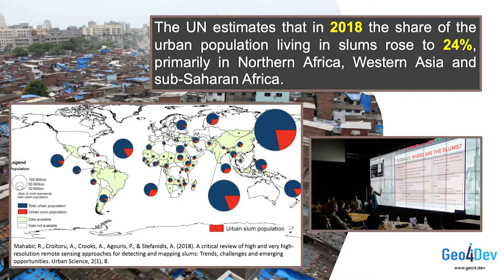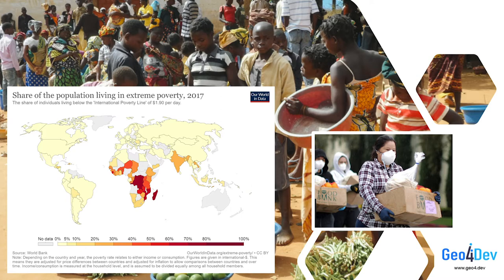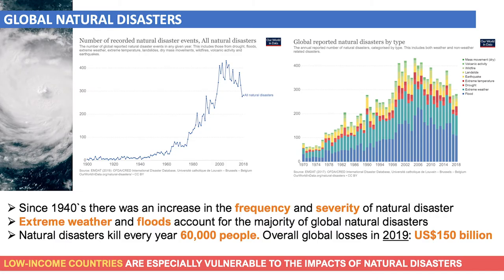Poverty and extreme poverty are also on the rise. In 2018, almost 8% of the world's workers and their families lived below the poverty line, and COVID-19 may push between 88 and 115 million people into extreme poverty. Natural disasters are another challenge many countries are facing. Since the 1940s, there has been an increase in the frequency and severity of global natural disasters. Extreme weather and floods account for the majority of global natural disasters, which kill every year close to 60,000 people. Low-income countries are especially vulnerable to the impacts of natural disasters.